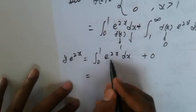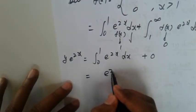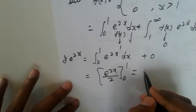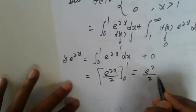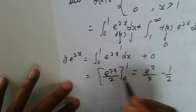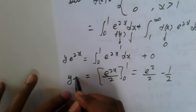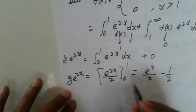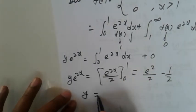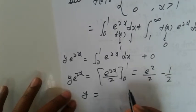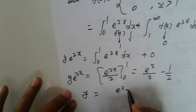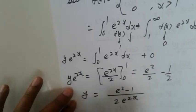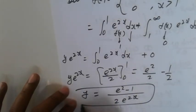Now integrating: the integral of e^(2x) is e^(2x)/2 evaluated from 0 to 1, which gives e^2/2 minus 1/2. Therefore, Y times e^(2x) equals (e^2 - 1)/2.